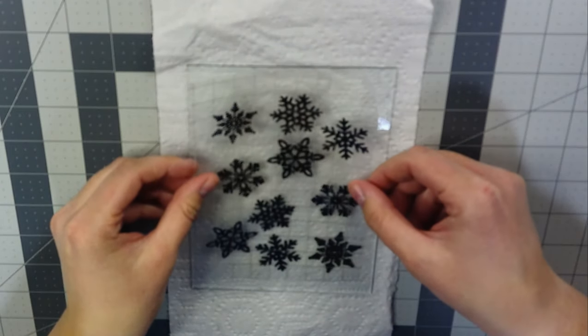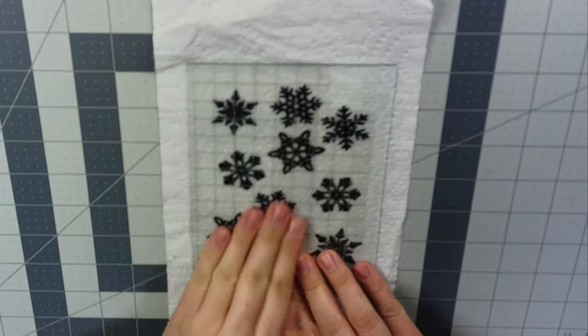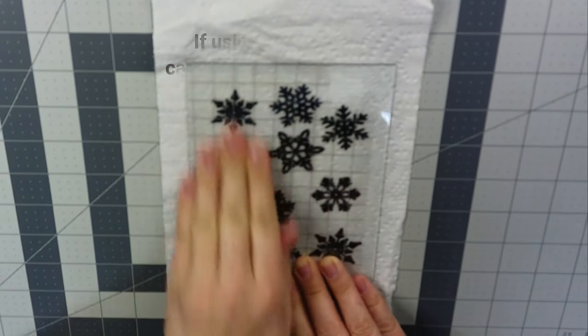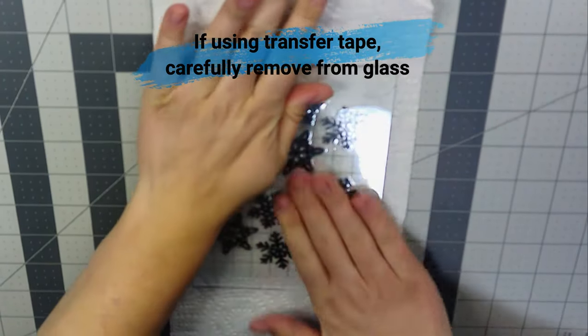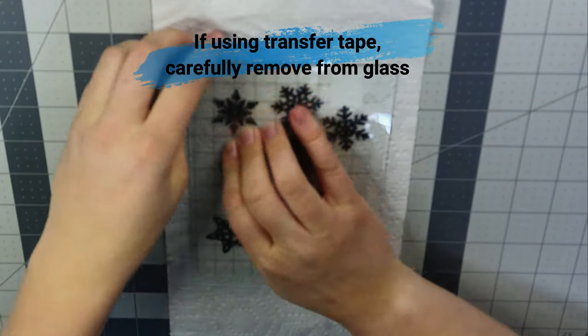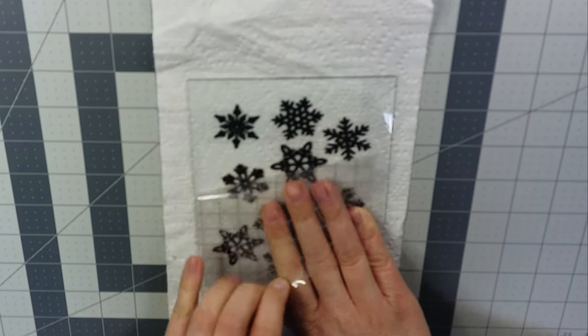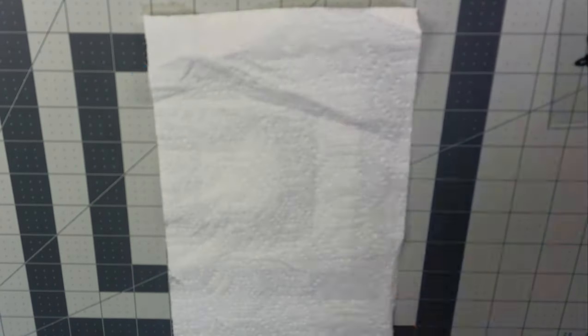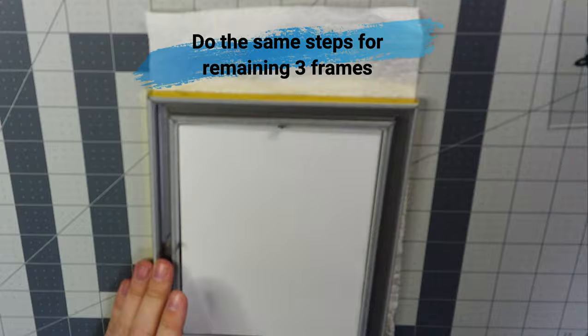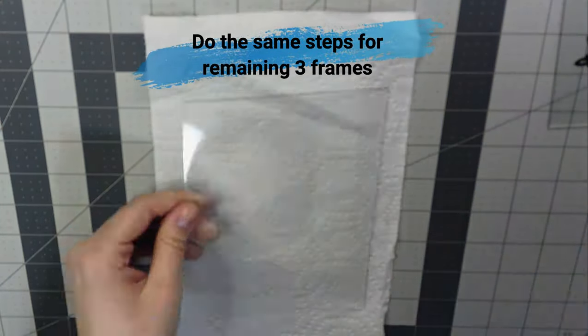Once you apply it to the glass, you just want to rub it on really well and be extra careful when you are taking the transfer tape off if you are using vinyl from a Cricut. Then you want to do the same steps for the remaining three frames.